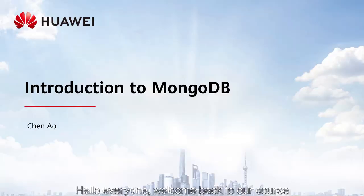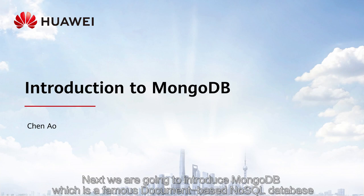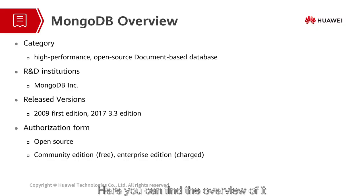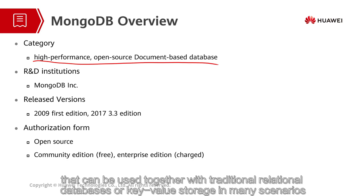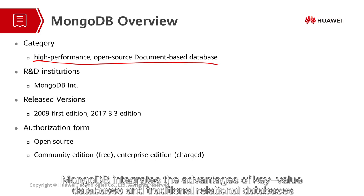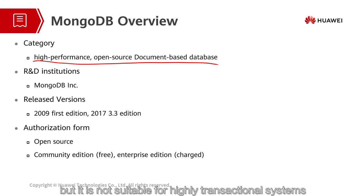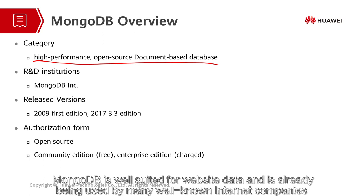Hello everyone, welcome back to our course. Next, we are going to introduce MongoDB, which is a famous document-based NoSQL database. Here you can find the overview of it. MongoDB is a high-performance, open-source, document-based database that can be used together with traditional relational databases or key-value storage in many scenarios. MongoDB integrates the advantages of key-value databases and traditional relational databases, but it is not suitable for highly transactional systems. MongoDB is well-suited for website data and is already being used by many well-known internet companies.